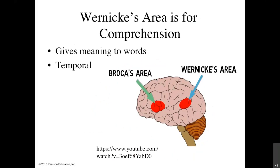Wernicke's area is in your temporal lobe and is where you understand speech — not just making words, but having meaning to those words. Scientists figured out what different regions did by studying patients with aphasias — problems with speech usually caused by a stroke. If you have a stroke localized to Broca's area, you could have Broca's aphasia; a stroke to Wernicke's area could cause Wernicke's aphasia.